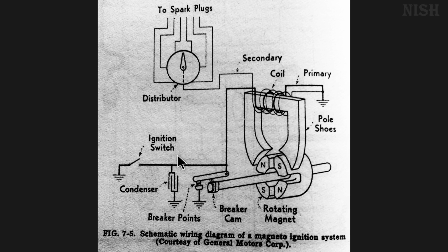Hello friends, today we are going to see some parts of the ignition system. It is a schematic wiring diagram of a magneto ignition system. Here ignition is based on the magneto direct current which is generated from the magneto. So let's see the construction first.